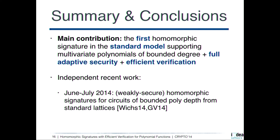To conclude, the main contribution of this work is proposing the first homomorphic signature in the standard model. Our scheme supports multivariate polynomials of bounded degree, is fully adaptive secure, and also achieves the new property of efficient verification. There is also independent recent work that appeared on ePrint in the last two months, where Wee and Gorbunov-Vaikuntanathan showed how to obtain weakly secure homomorphic signatures for circuits of bounded polynomial depth, based on standard assumptions.